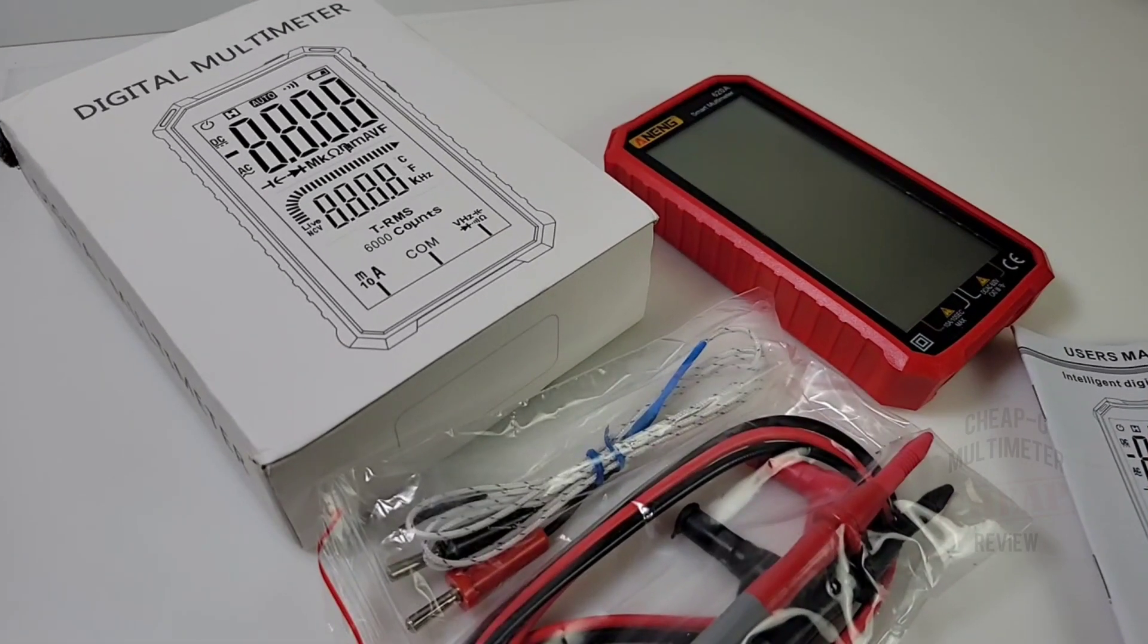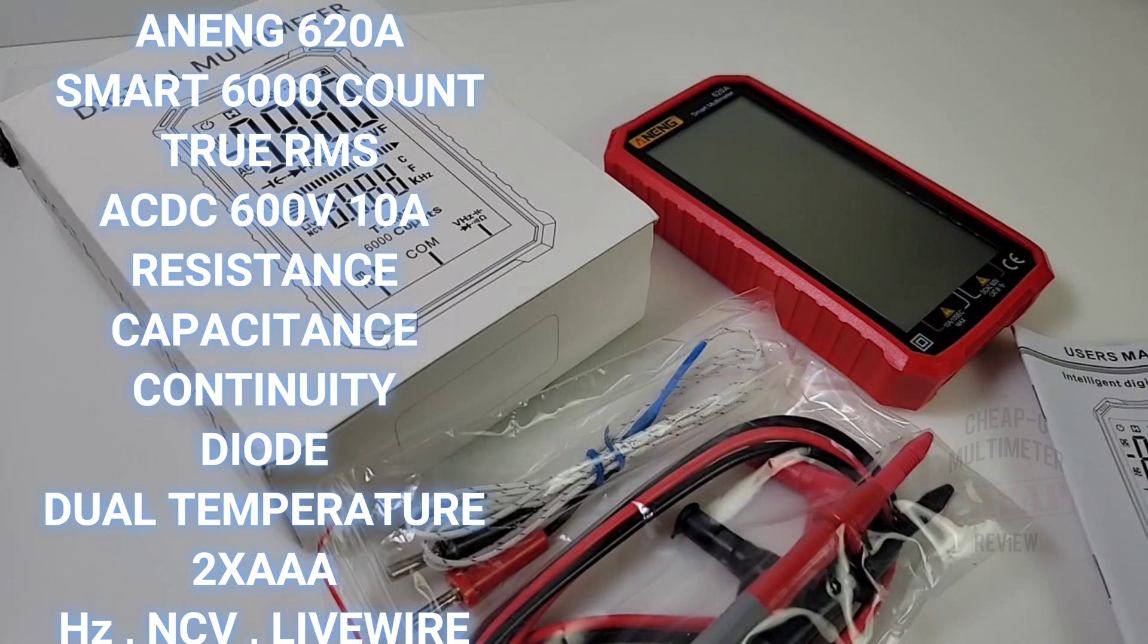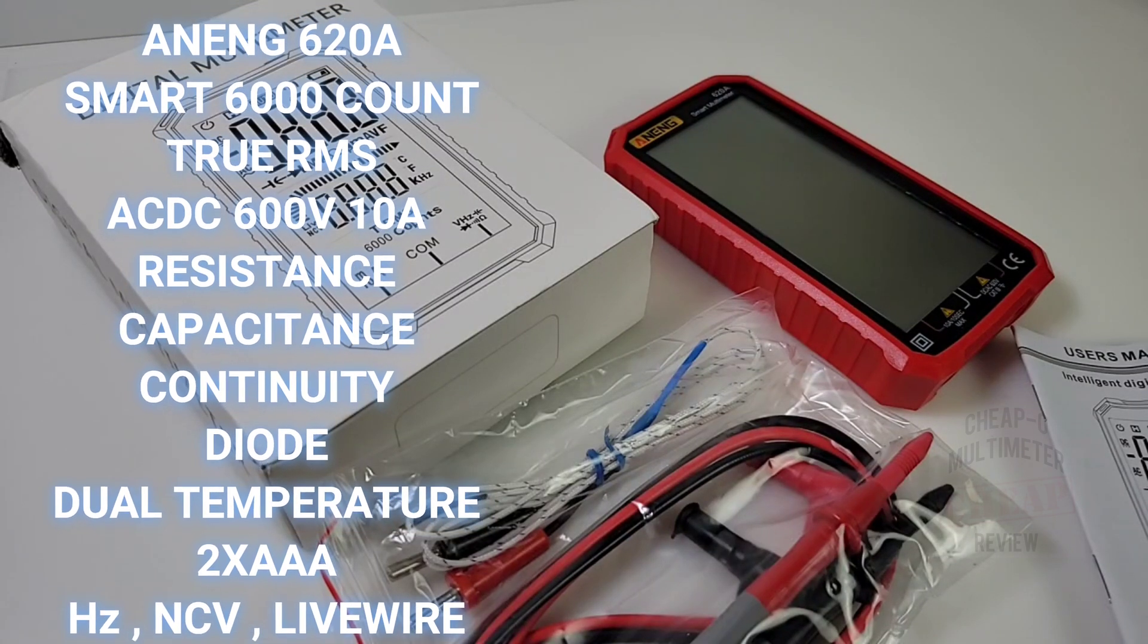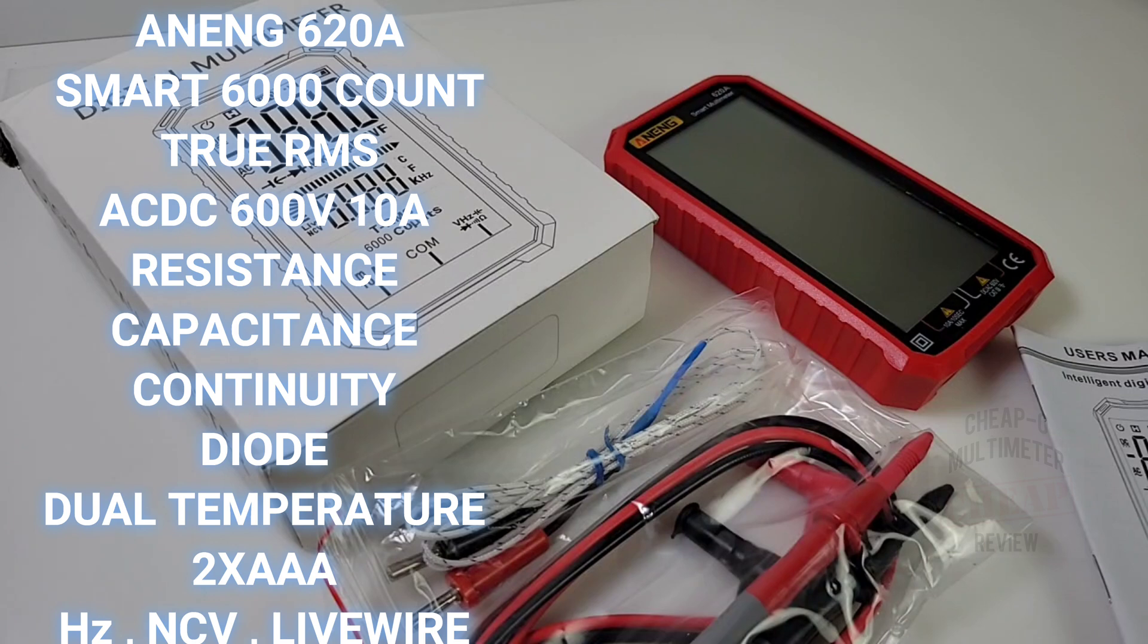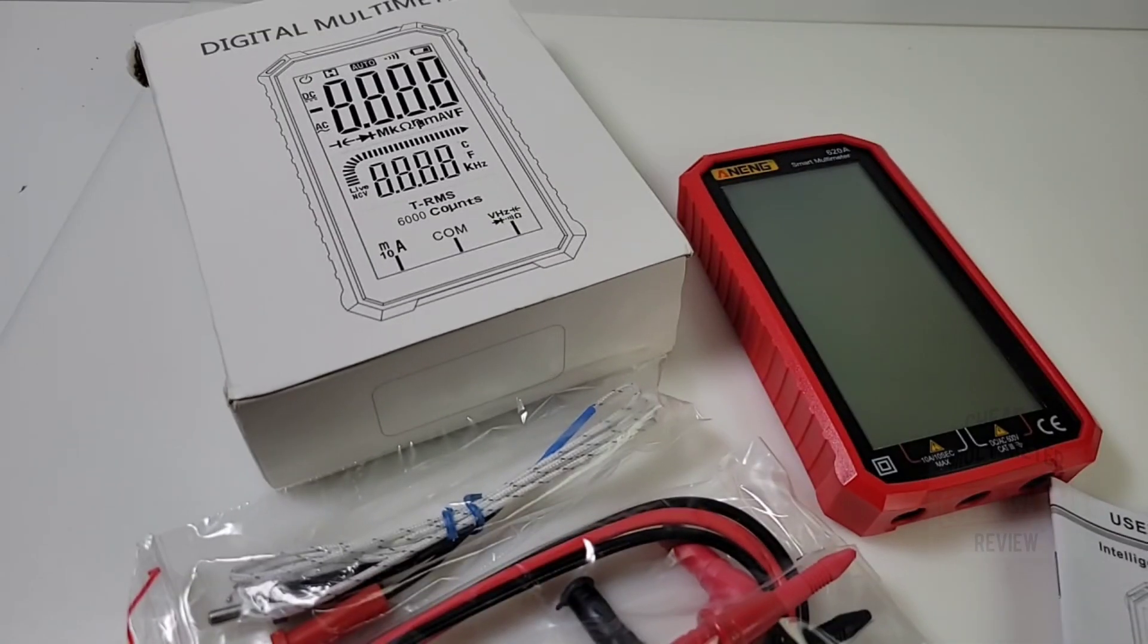Finally, the ANENG 628 is in the house. I ordered this probably about three months ago and it has just arrived. Long story short, it's here on the bench and we're going to look at it today, another one of those smart meters.